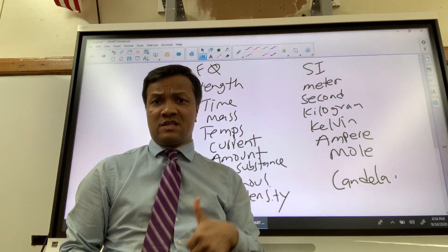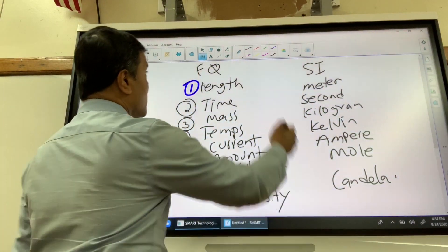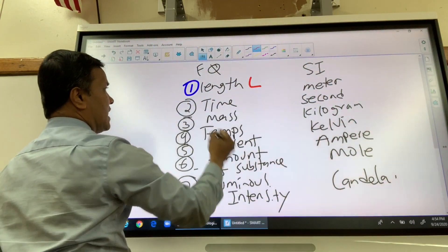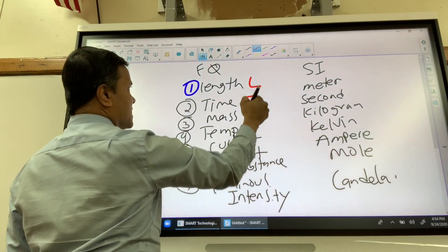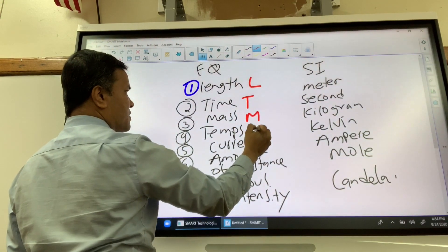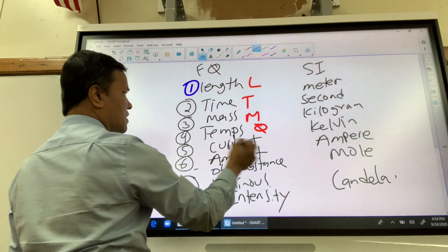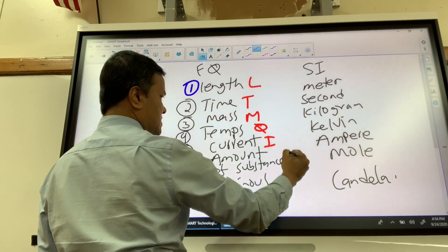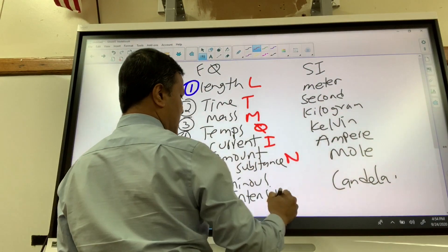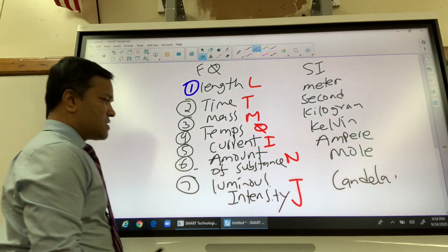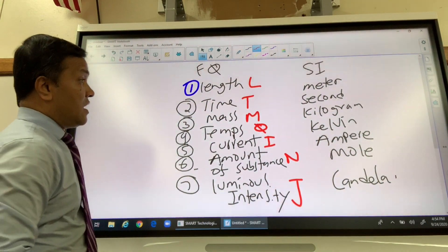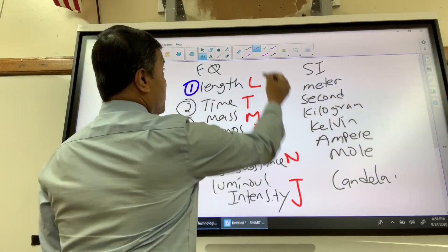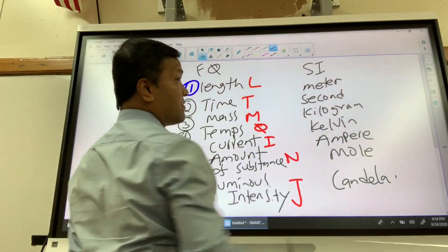I'll give you the dimensional symbols. Pay attention. Length is capital L, time is capital T, mass is capital M, temperature is θ, current is I, amount of substance is N, and luminous intensity is J.